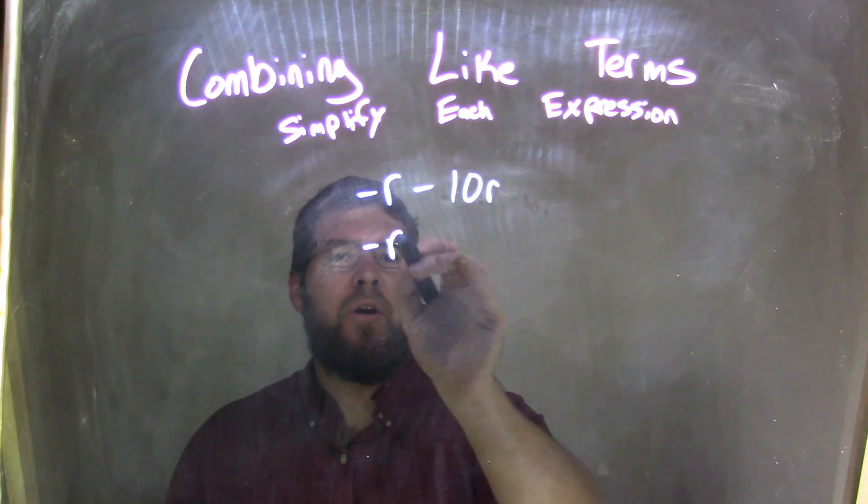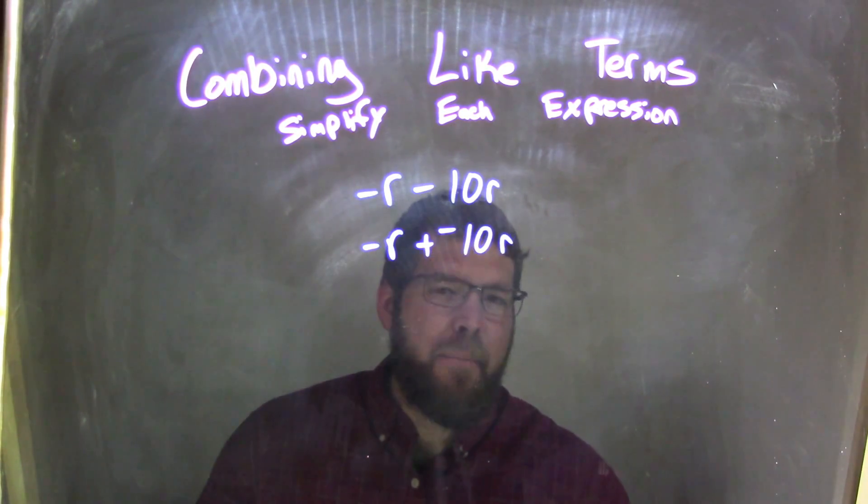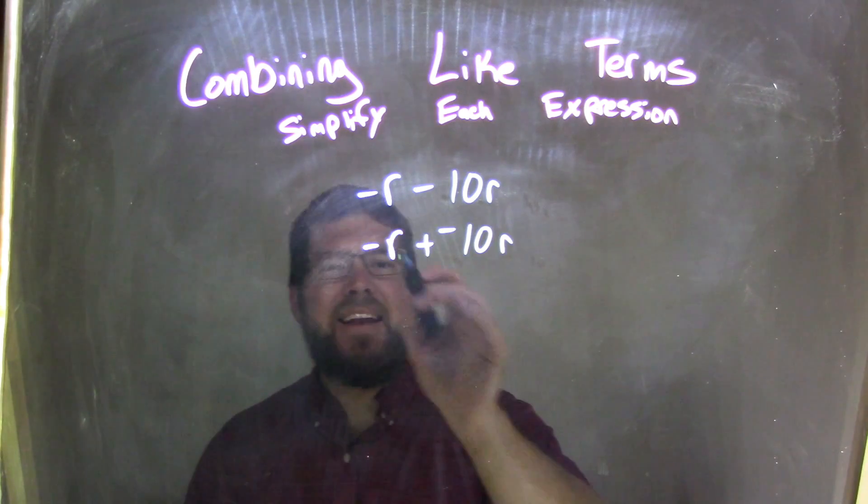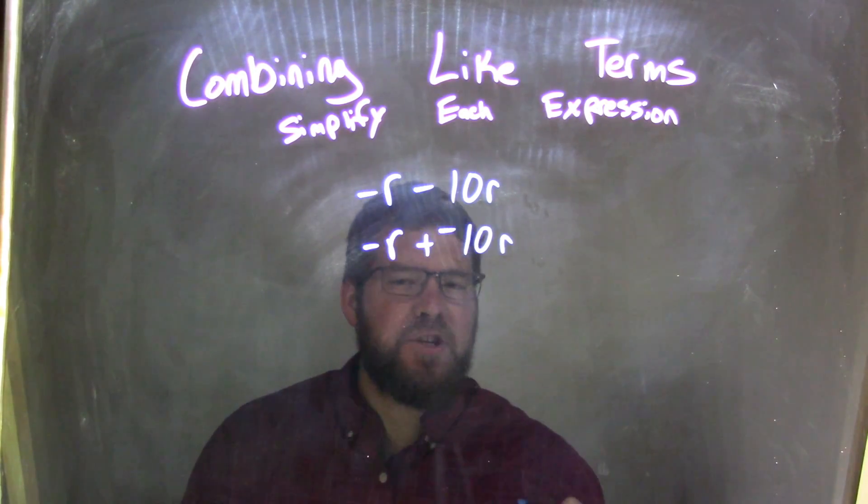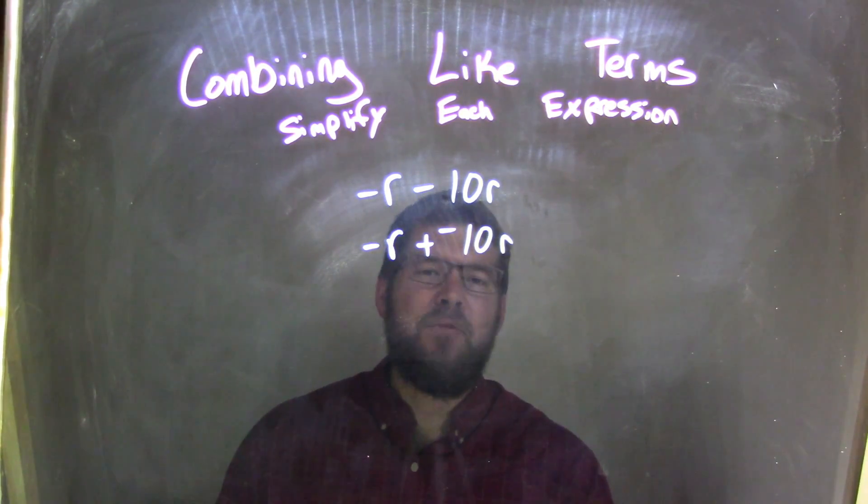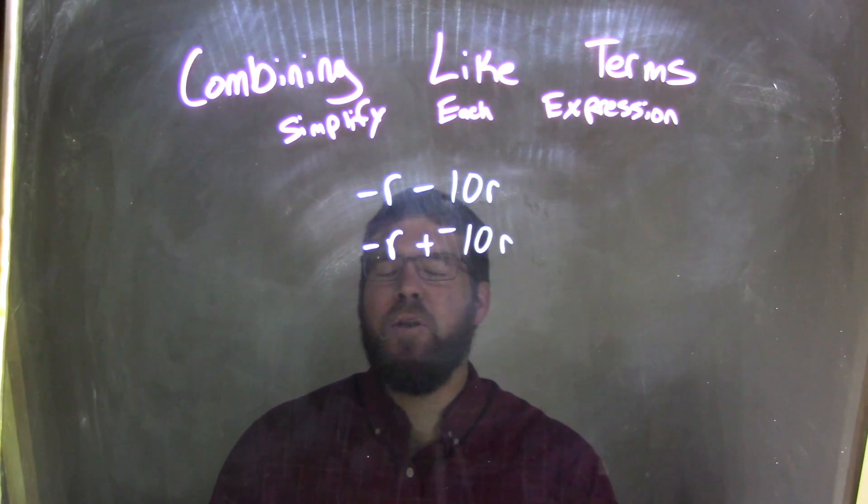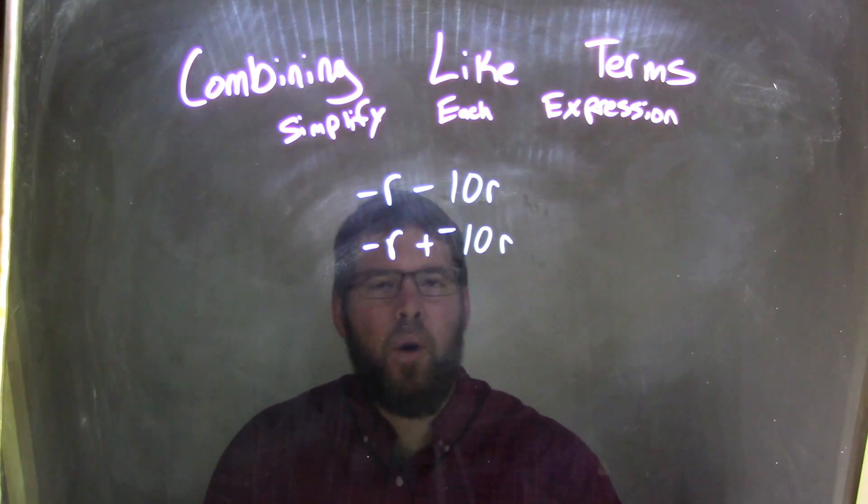So, negative r, I rewrite this as plus a negative 10r, and that makes it easier for me to see, because that negative r has like an imaginary one. But when we have one variable out front, we don't put the number, we don't put the coefficient, we just know that there's one of them, right?